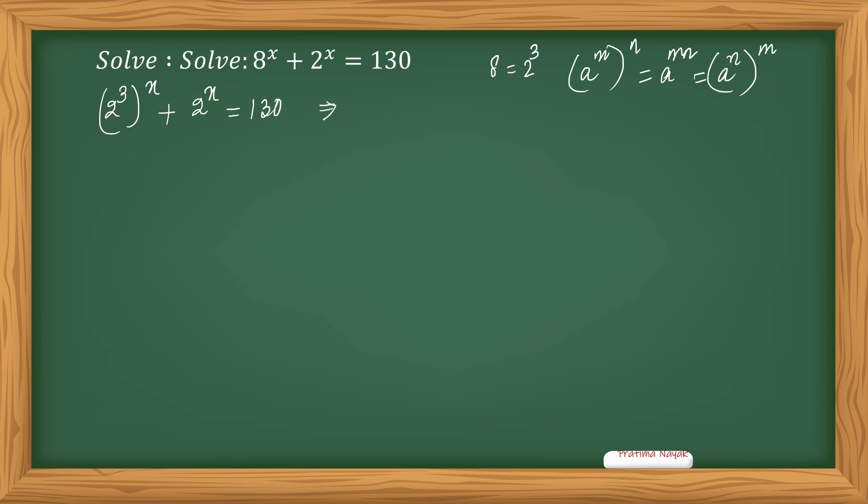I can write that (2 to the power x) cubed plus 2 to the power x, and taking 130 to the left side it becomes 0. If I take 2 to the power x as a, then it becomes a cubed plus a minus 130 equals 0.